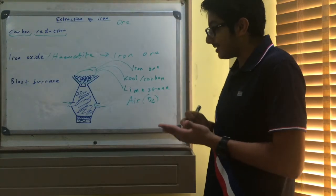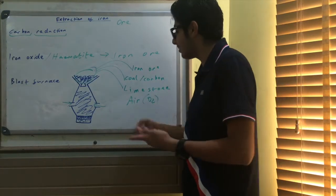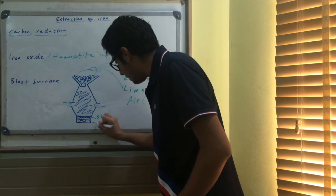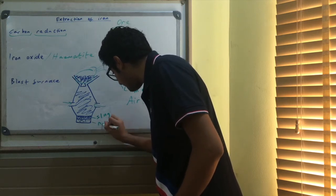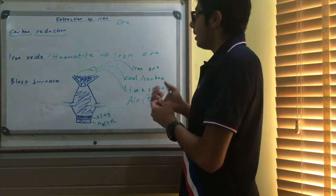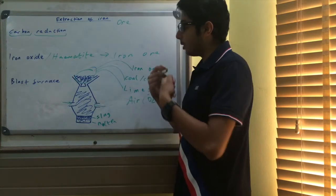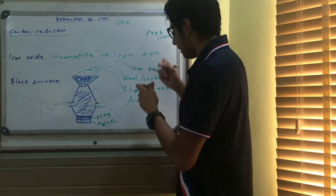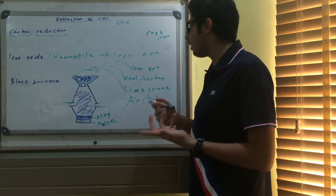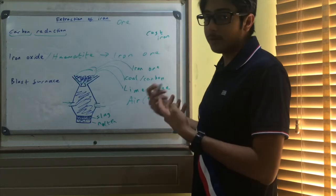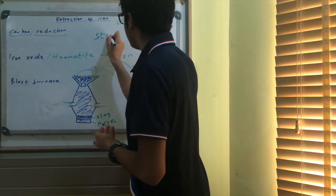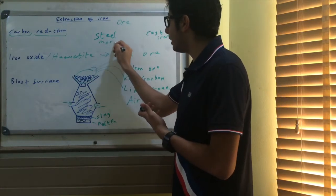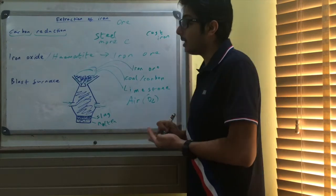Why not use pure oxygen? Because pure oxygen is expensive — air gives you the oxygen anyway. From the blast furnace you get slag and molten iron. Molten iron is at the bottom because it's denser than slag. The iron extracted is called cast iron, but it's very pure and therefore very soft, so it's usually converted into a more useful alloy like steel.